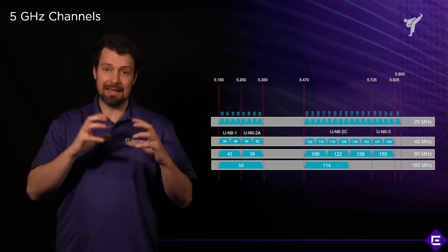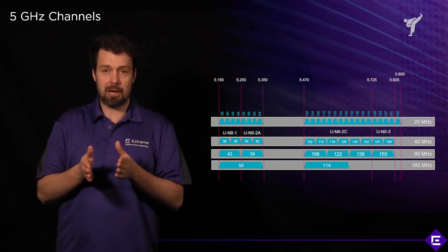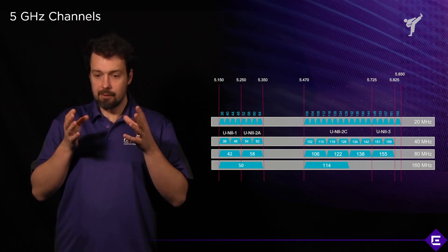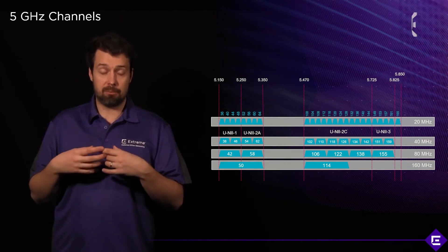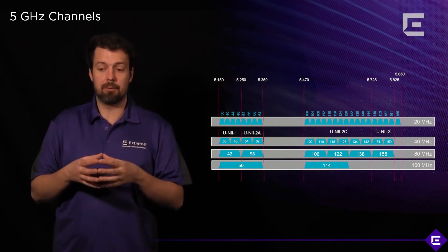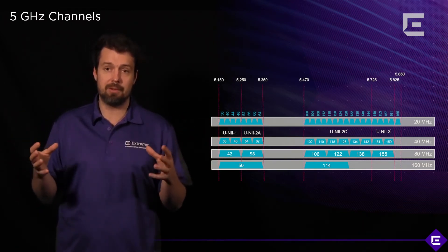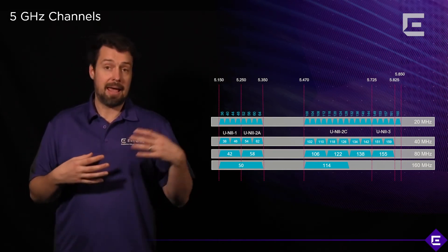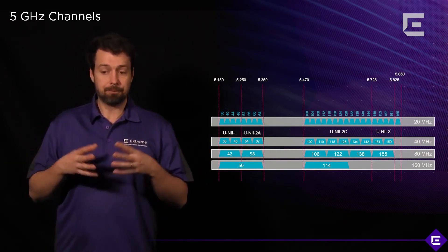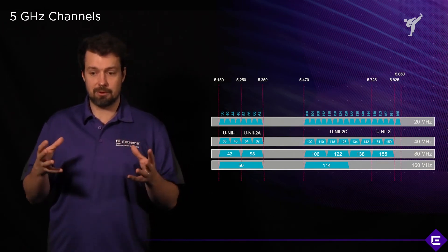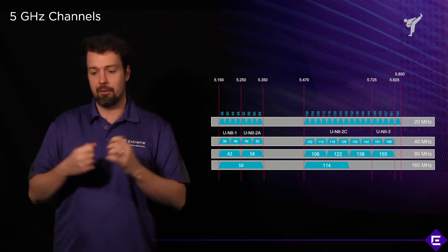Oftentimes it's better to have more, narrower 20MHz channels and eliminate any co-channel interference, which will result in a better-performing network than having multiple 40MHz or wider 80MHz channels. Those wider channels are subject to CCI and it's harder for ACSP to work around those problems. As a general recommendation at the time of this training, do not implement anything wider than a 40MHz channel.